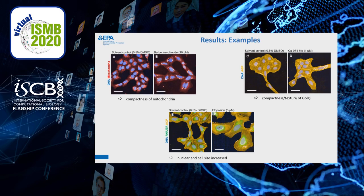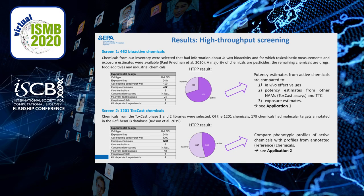Here are some visual examples of how such phenotypes can look. Sometimes they are quite striking, but they can also be very subtle. For example, here it should be quite obvious that the cells in the right picture are much larger than the cells in the left picture. To date, we have run two screens, and I'm showing you the results of these two screens in the two different applications that I'm going to introduce you to now.